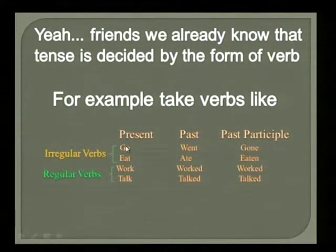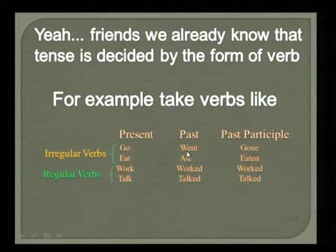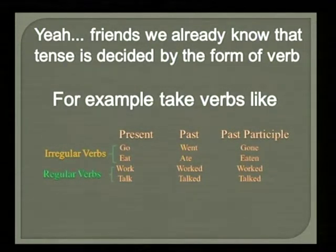Most of our friends are afraid of English. To remove that fear, I am here to explain tenses. For example: go, went, gone. 'Go' is the present form, 'went' is the past form, and 'gone' is the past participial form. Most people think 'gone' is the future form — that is wrong. We should not say the past participial form is the future form.